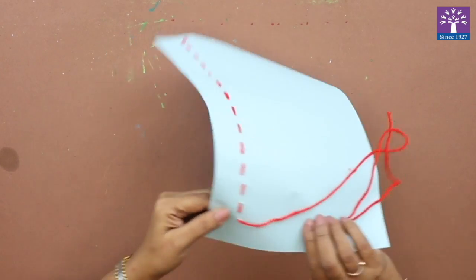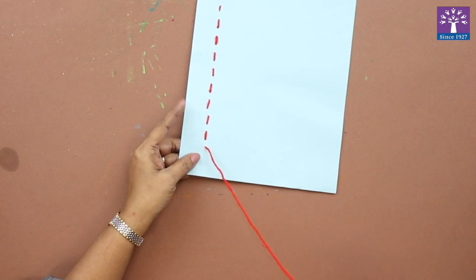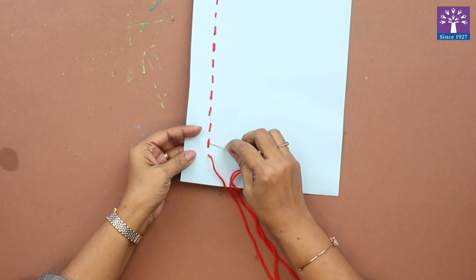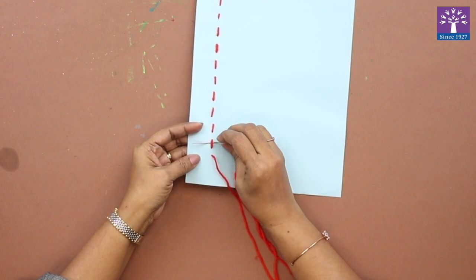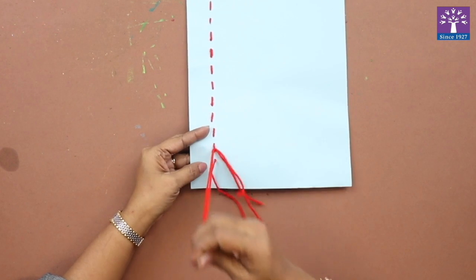From behind we will tie a knot. Now I'll teach you how to tie a knot. You will pass the needle from the stitch like this.